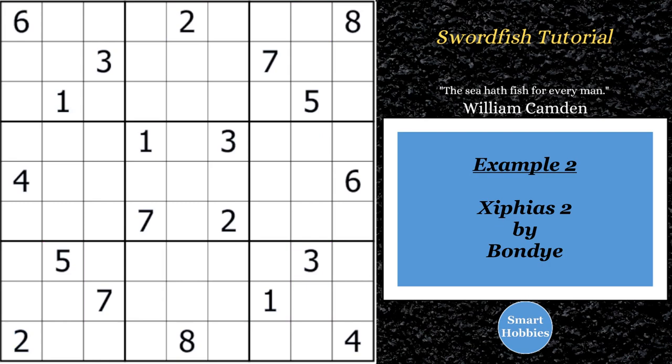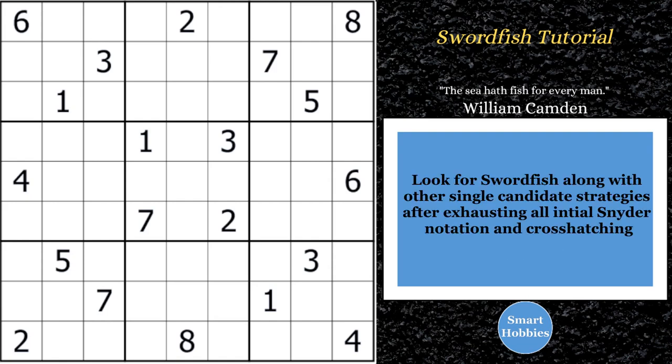For our next example, I picked a puzzle called Xipheus 2 by Bondi. I don't think I've actually featured this in a video before, but I've featured some of those other puzzles. And Xipheus actually means swordfish. It's Latin for swordfish or type of swordfish. And so one of those keys of, hey, when would I want to look for a swordfish? If it's in the name of the puzzle, that's probably a good clue that you might want to look for swordfish in solving.